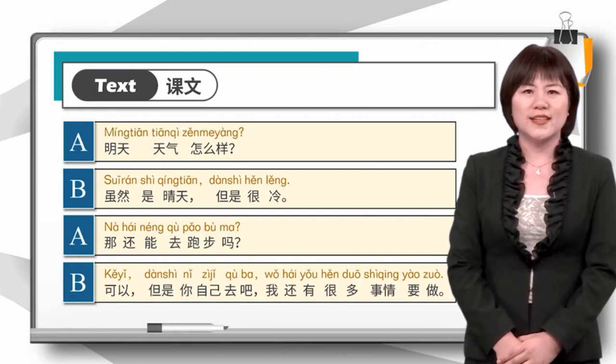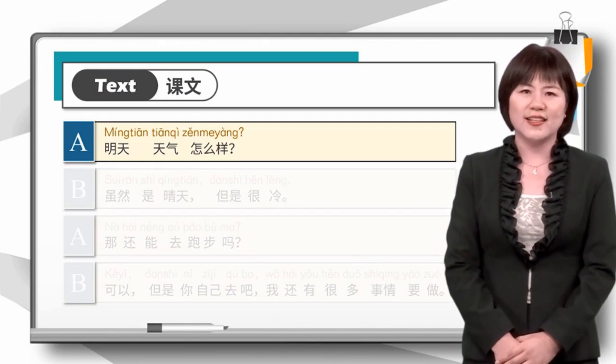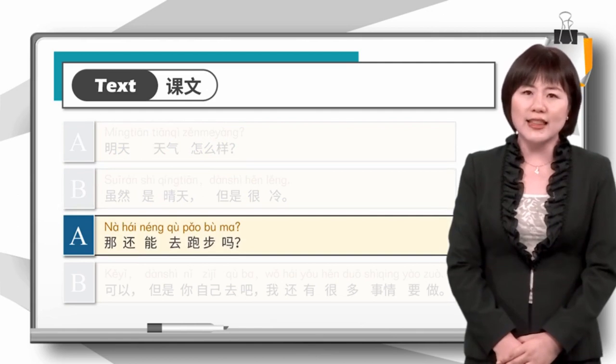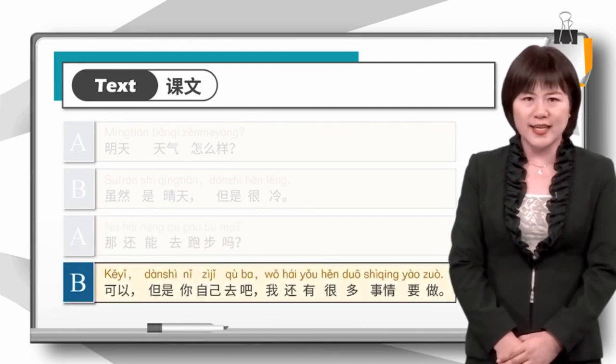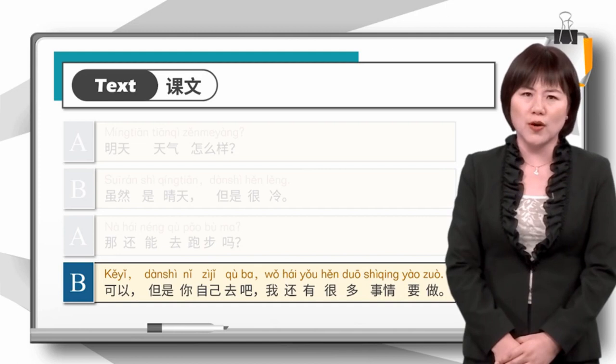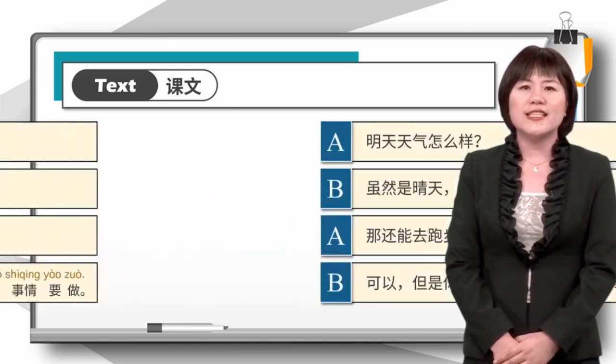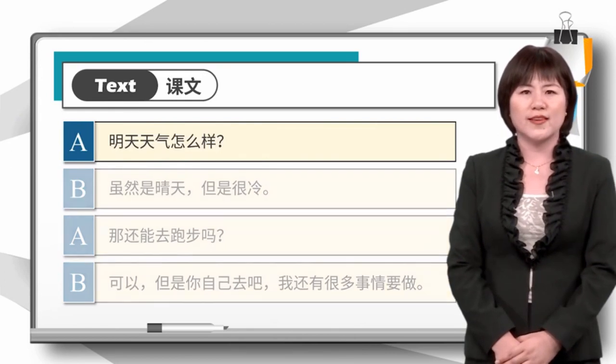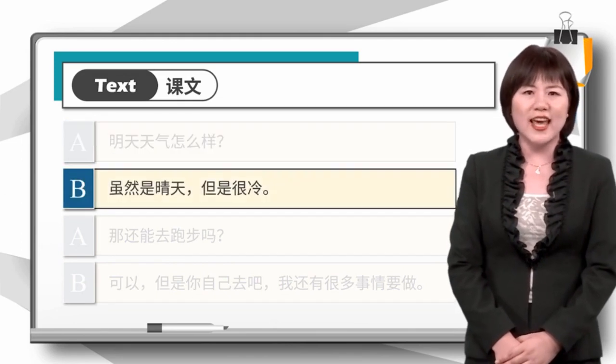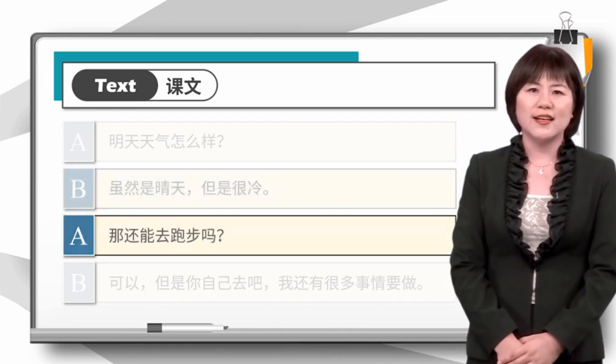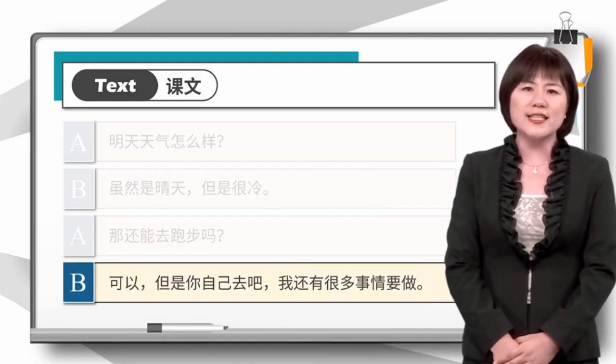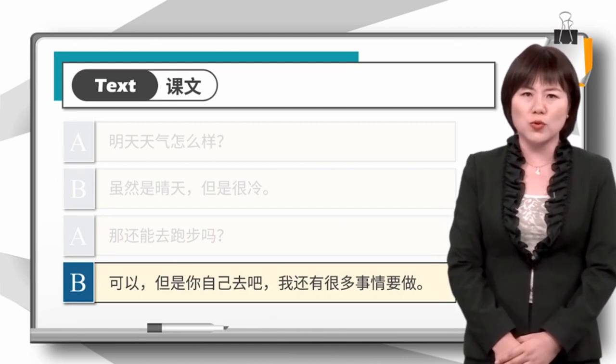请跟我读. 明天天气怎么样? 虽然是晴天, 但是很冷. 那还能去跑步吗? 但是你自己去吧. 我还有很多事情要做. 请再跟我读一遍. 明天天气怎么样? 虽然是晴天, 但是很冷. 那还能去跑步吗? 可以, 但是你自己去吧, 我还有很多事情要做.